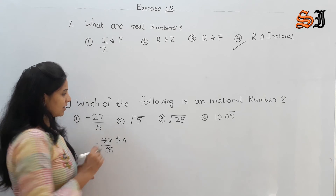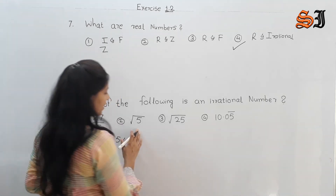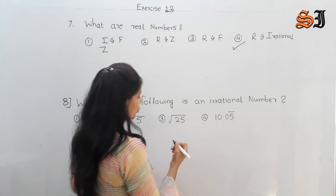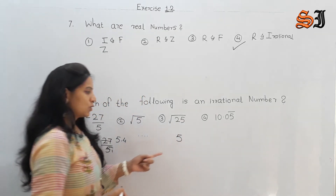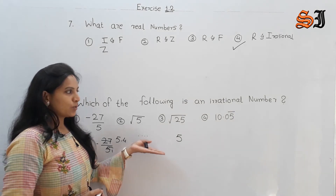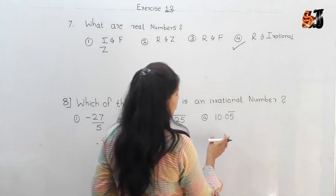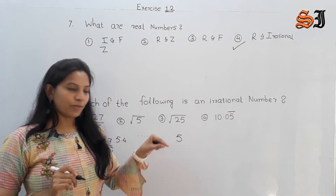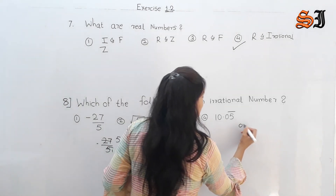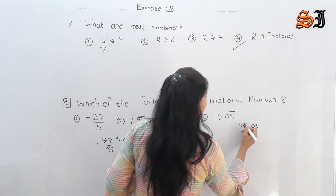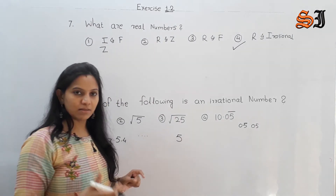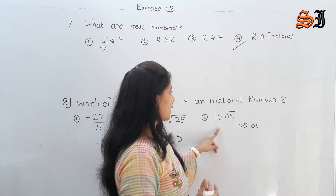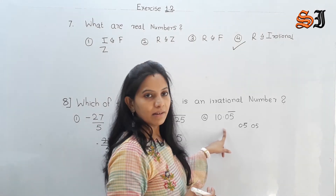Root 5 is our candidate. Root 25 equals 5, which is a natural number and therefore also a rational number. And 10.05 bar means 10.0505... — the digits 05 continue repeating. This is non-terminating and recurring, not non-recurring.